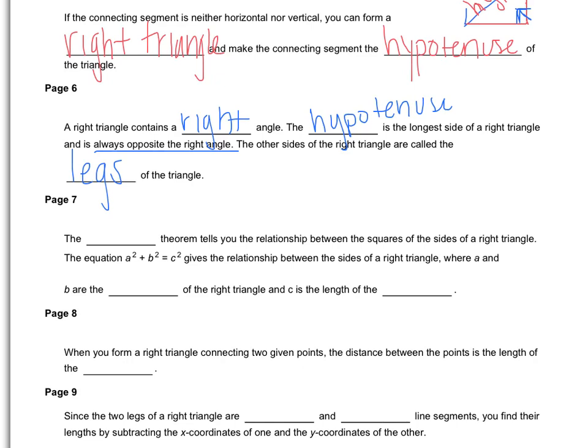There's a theorem that you've probably heard of called the Pythagorean Theorem that tells us the relationship between the squares of the sides of a right triangle. So this formula, a squared plus b squared equals c squared, gives the relationship between the sides of a right triangle where a and b are the legs of the triangle and c is the length of the hypotenuse.